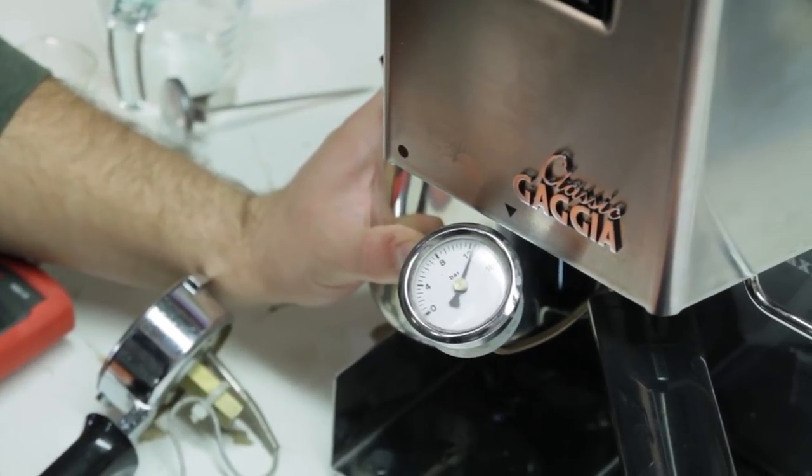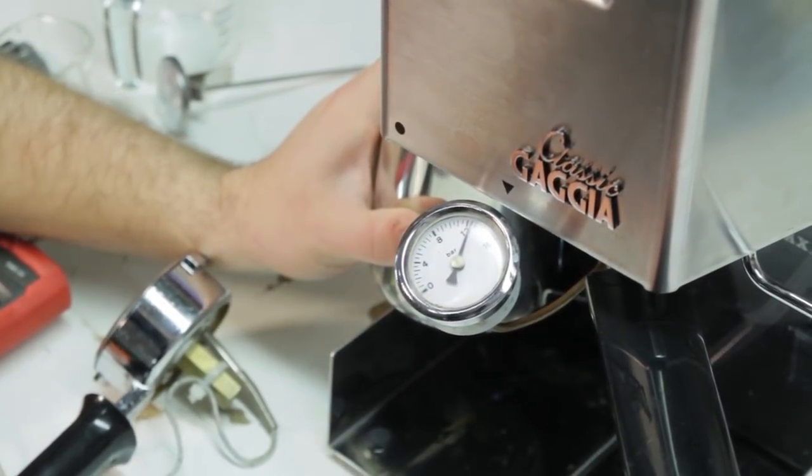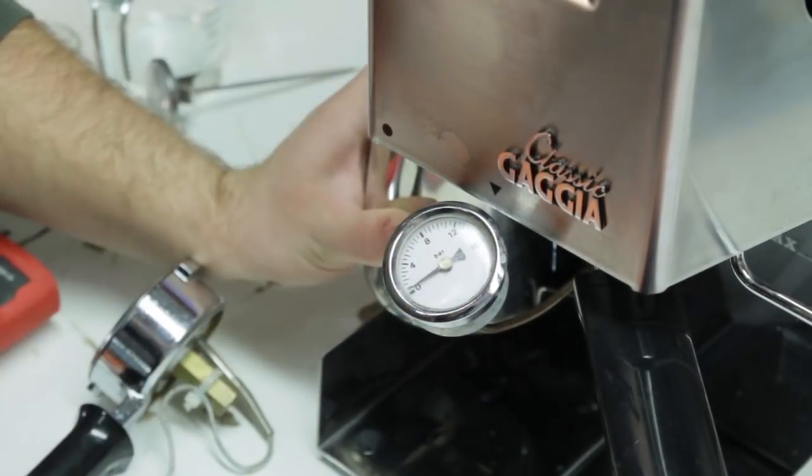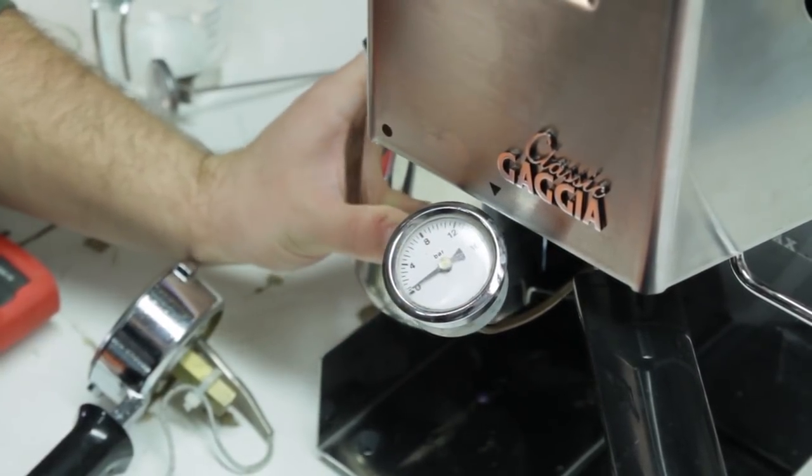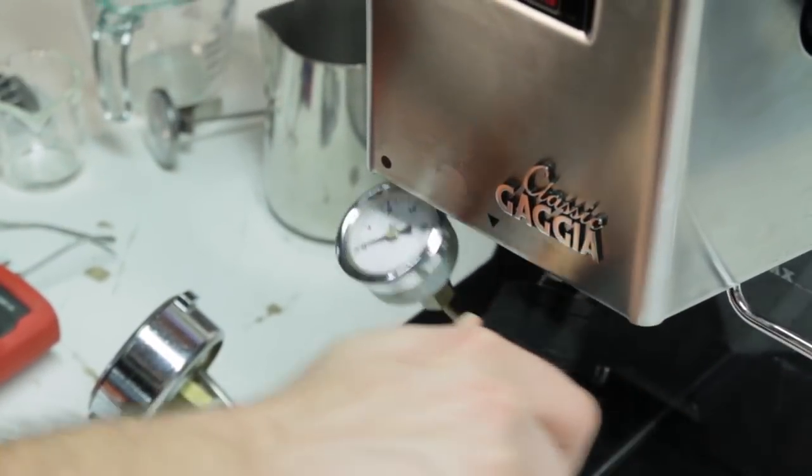Then we put a pump pressure gauge right onto the brew group. We check the pump pressure to make sure that's up where we want. At the same time, we actually check for leaks through the steam wand. Now the hydraulic system is under a lot of pressure. If the steam valve is going to leak, it'll leak at that point.